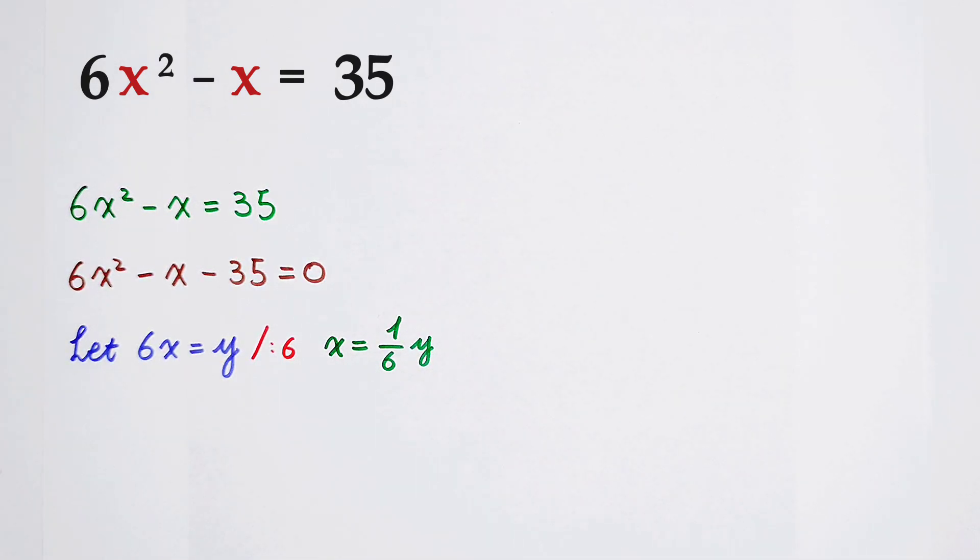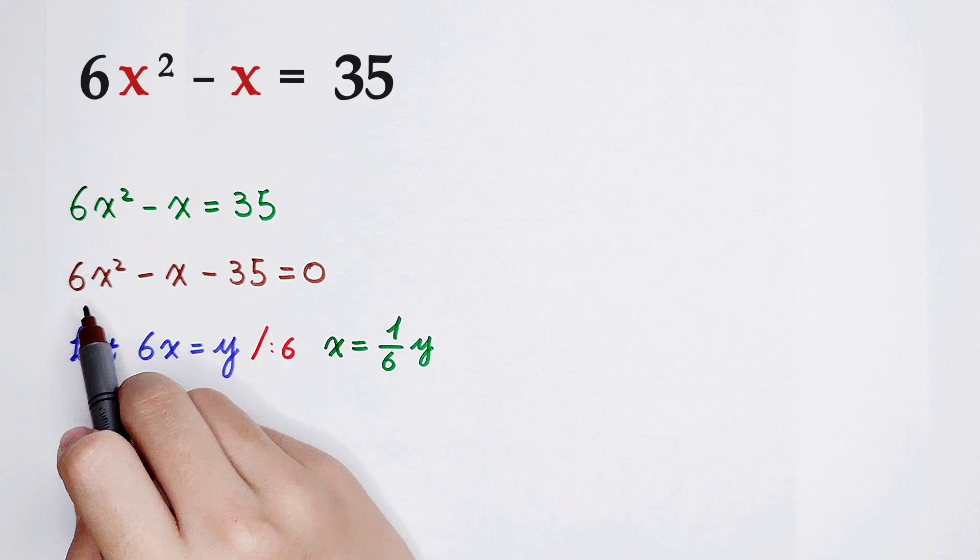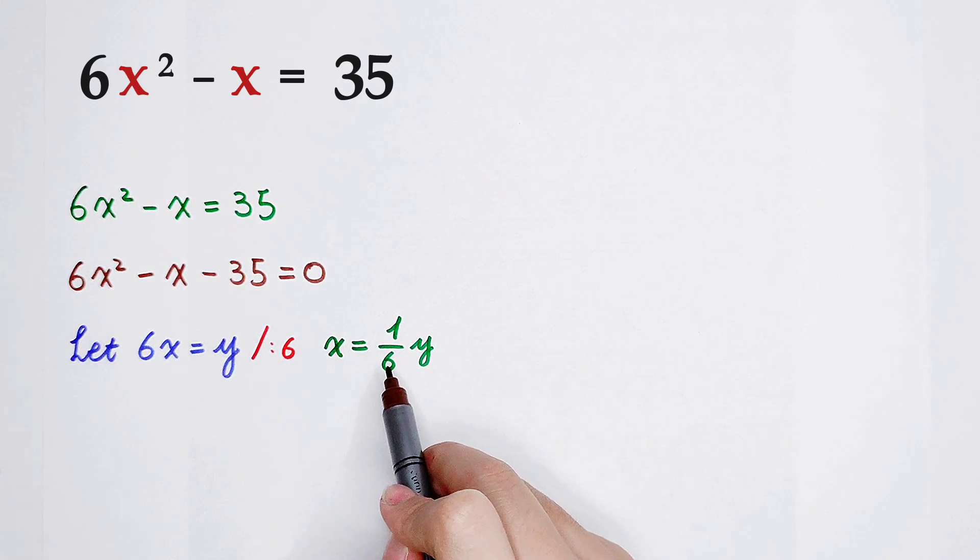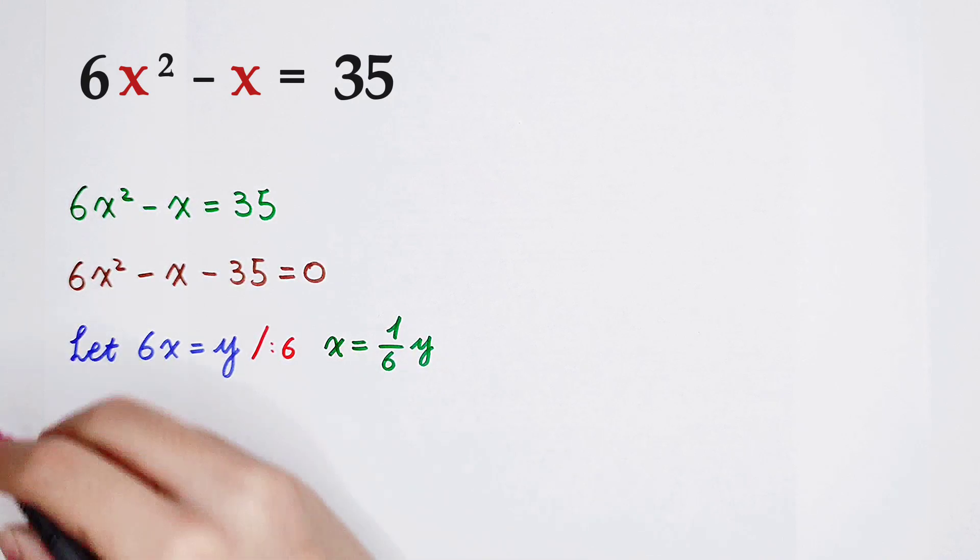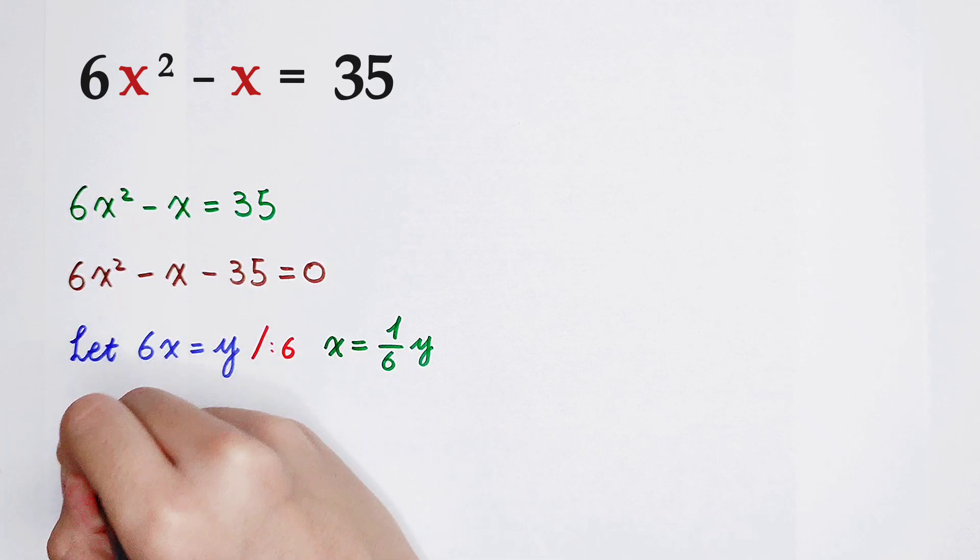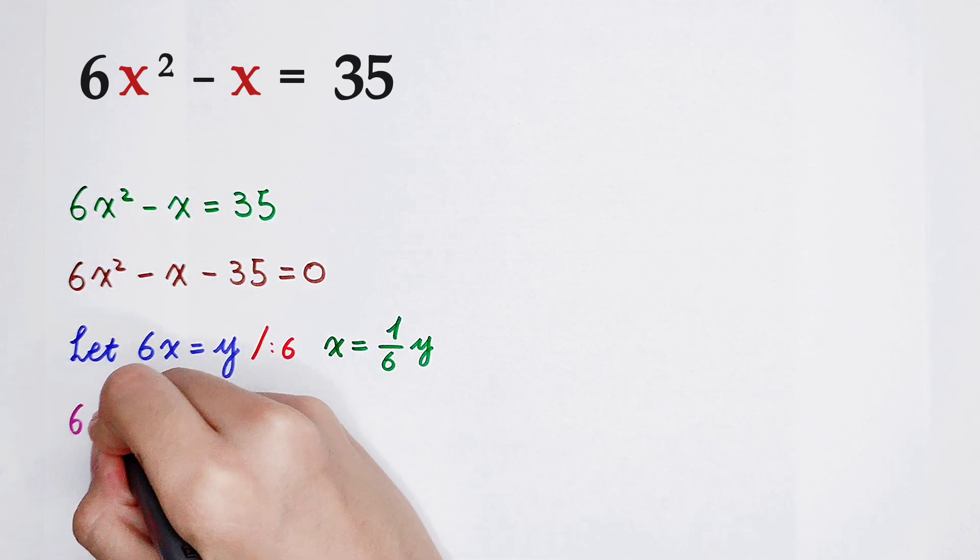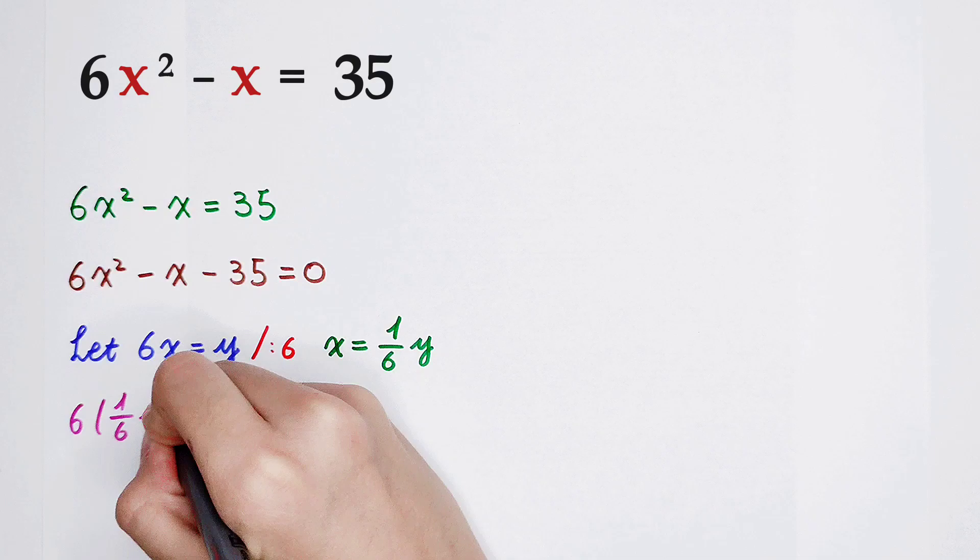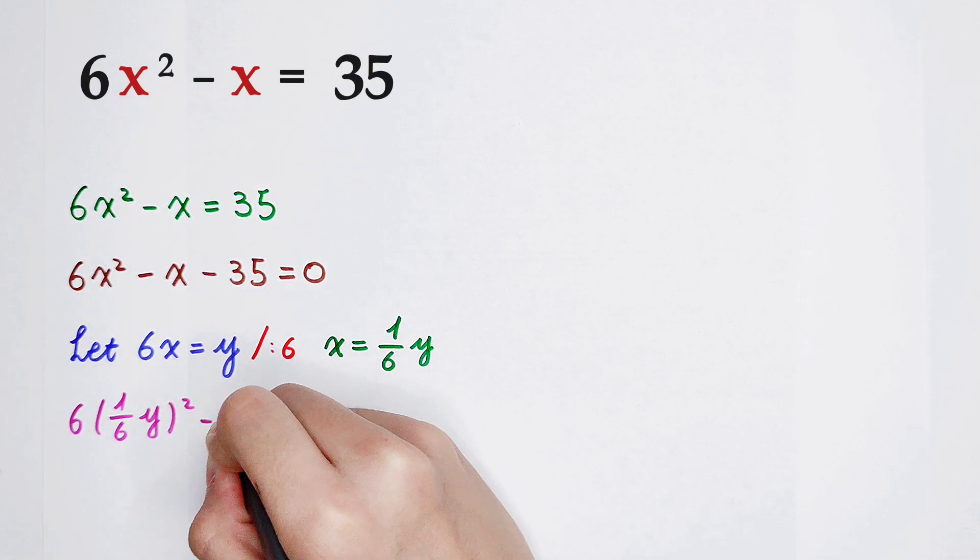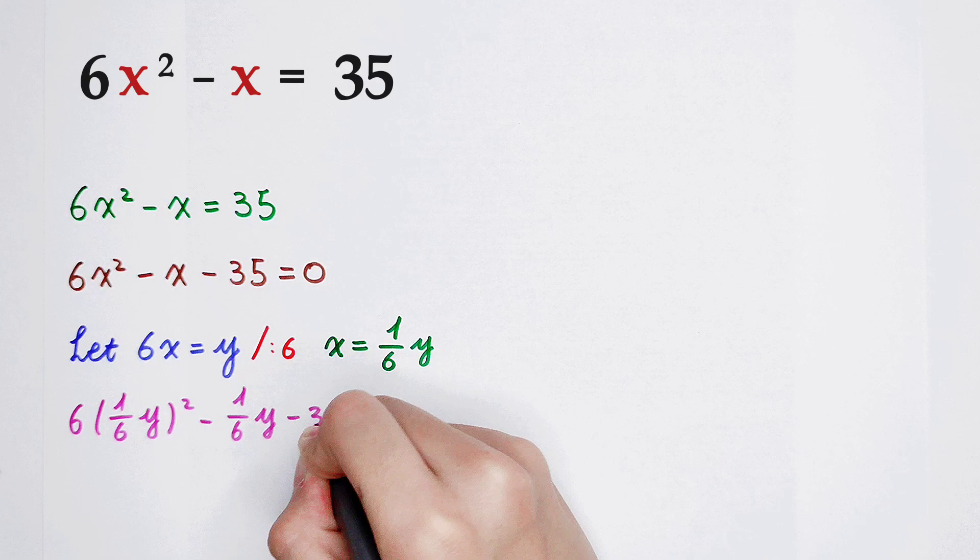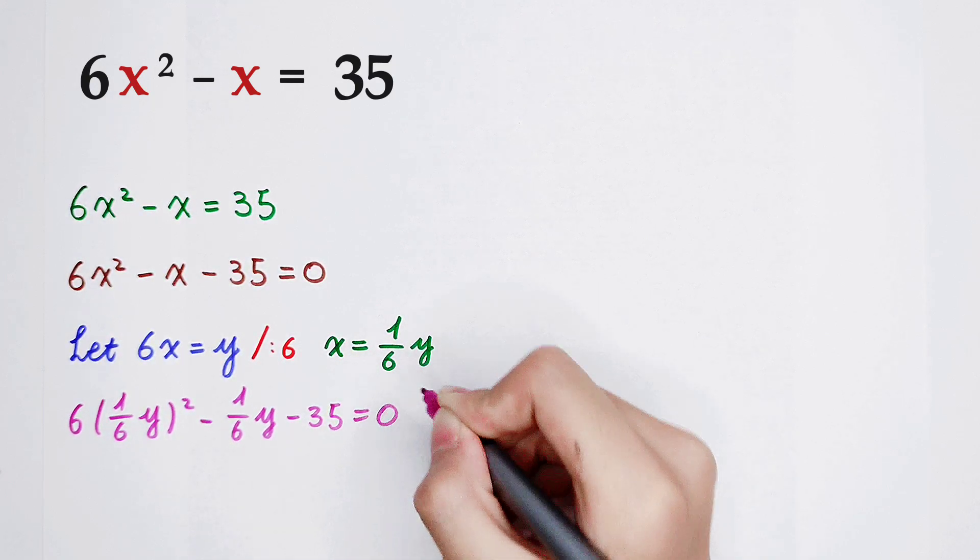Now, here, all of the x can be written as 1/6 times y. 6 times x squared is 6 times (1/6 times y) squared. Then minus 1/6 times y, and then minus 35 equals 0.